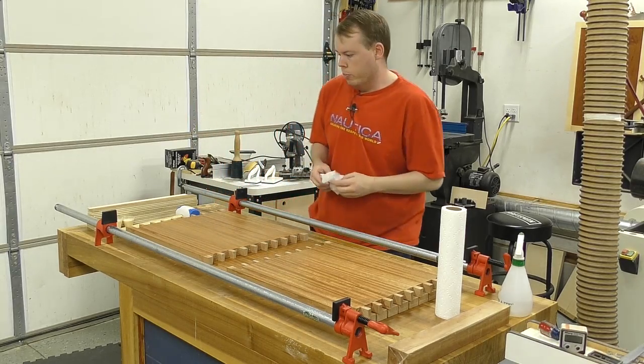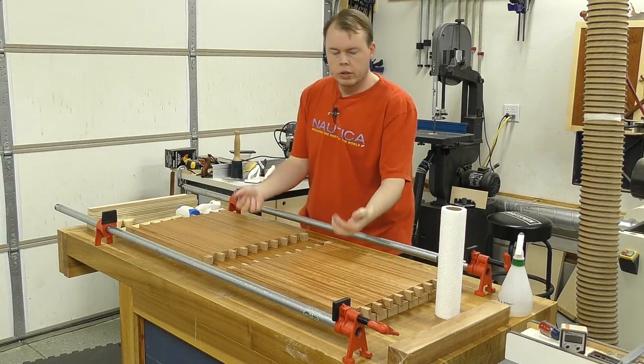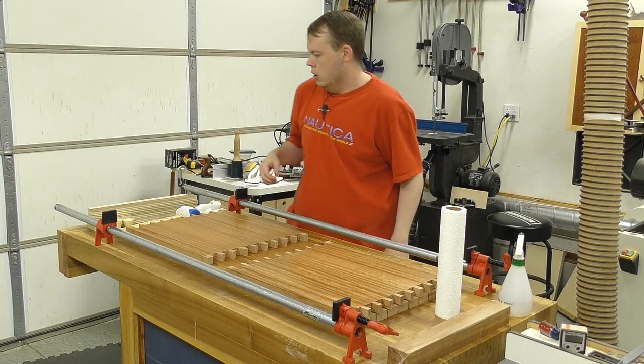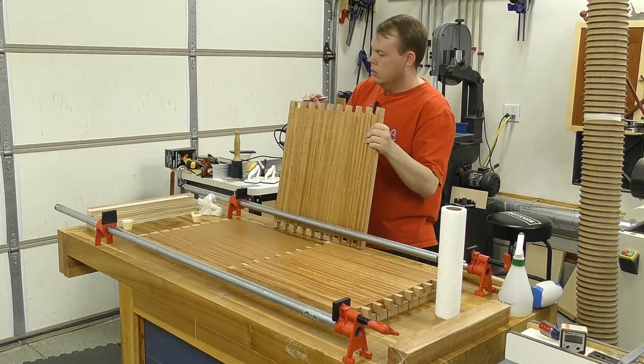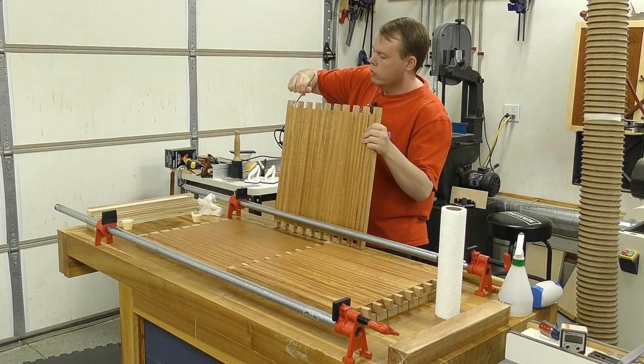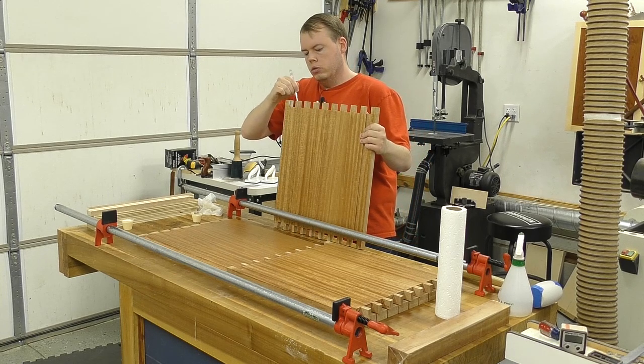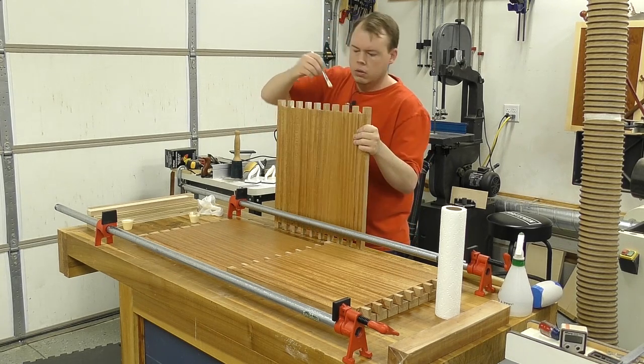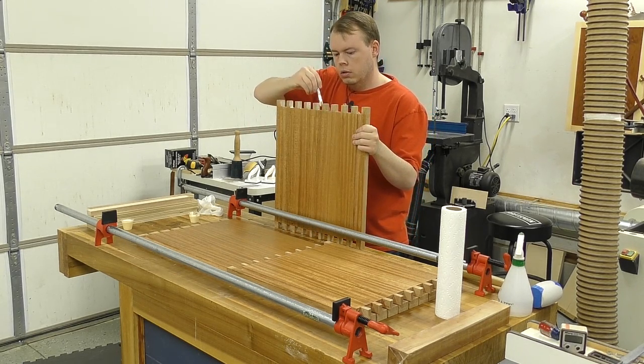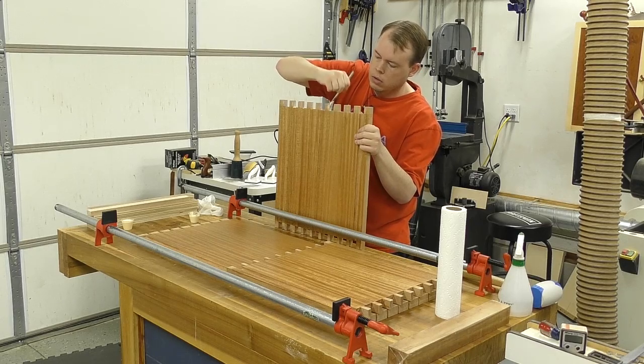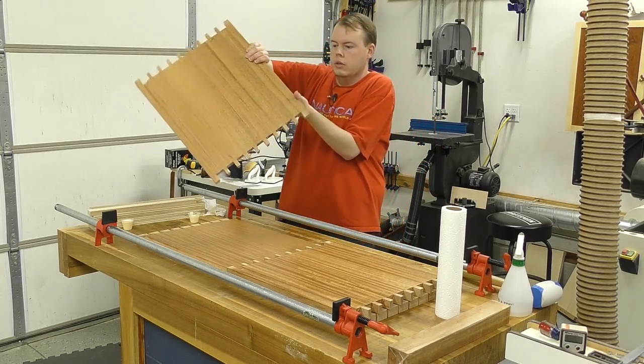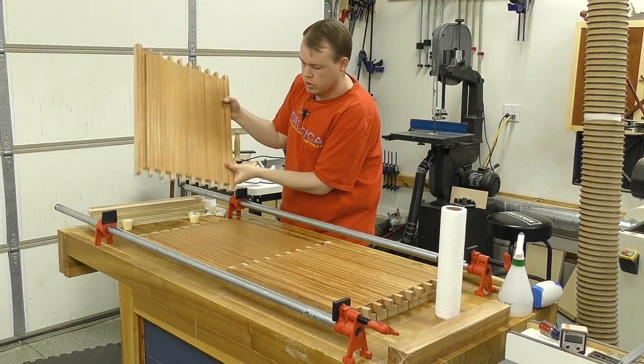So we're probably at the most stressful part of this project, so I've gone ahead and done a mock glue up just to make sure that there's not going to be any surprises. To begin, I apply the glue to the pins and the sockets. It's important to note that I made sure that all surfaces of the pins and the sockets received the glue. Now I can put the board in place and move on to the other pin board.